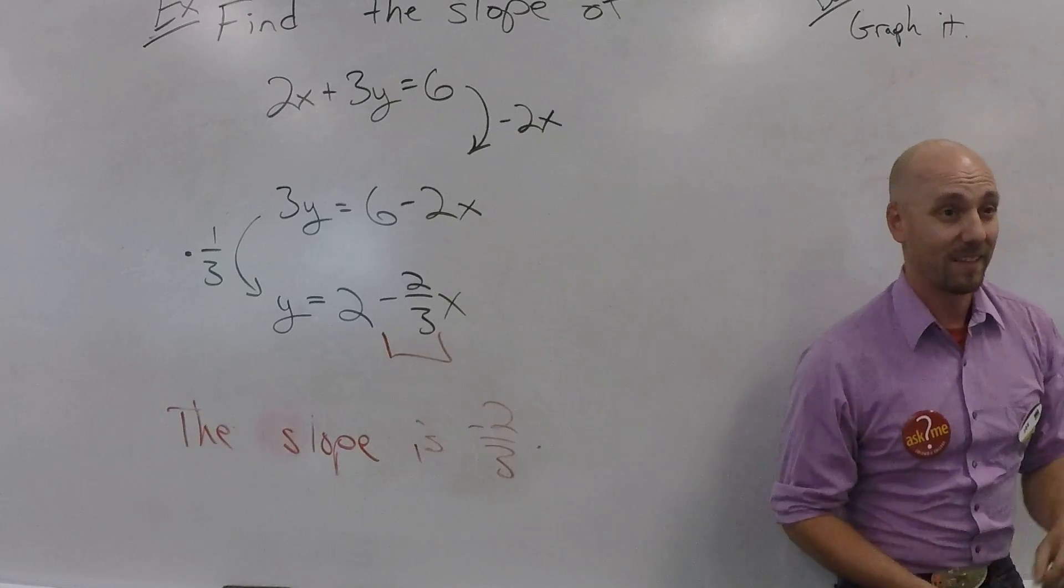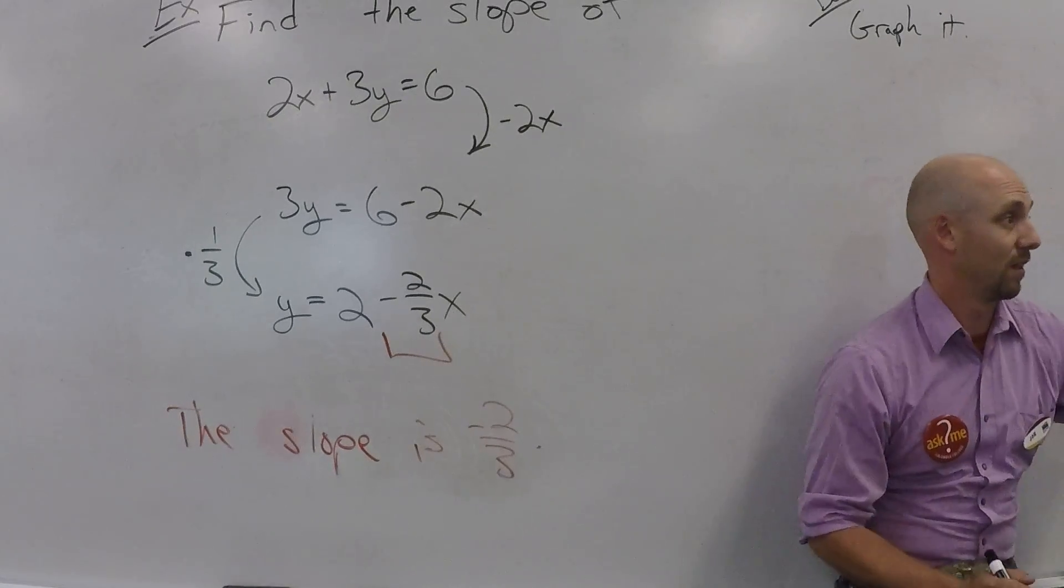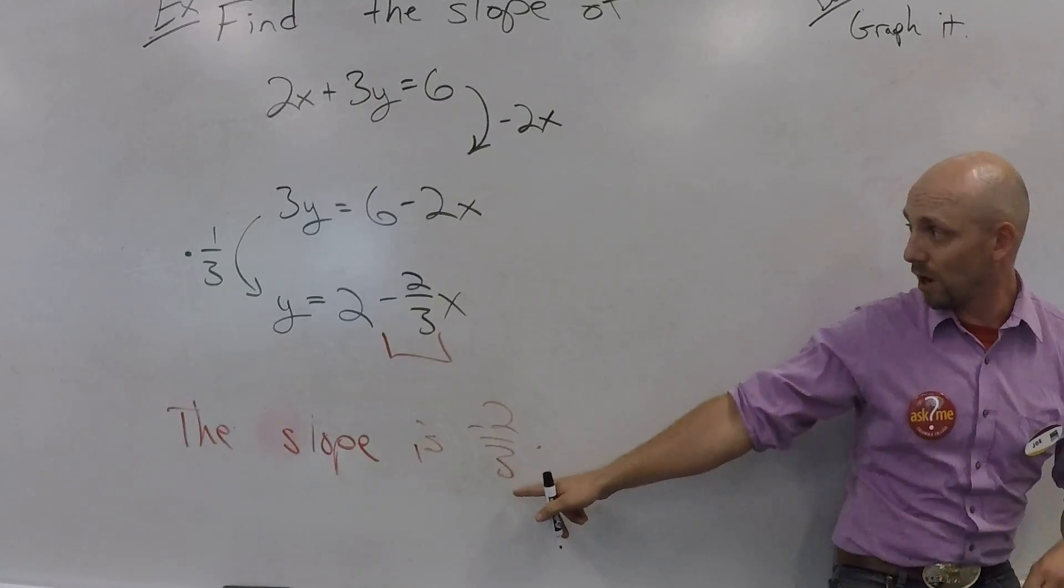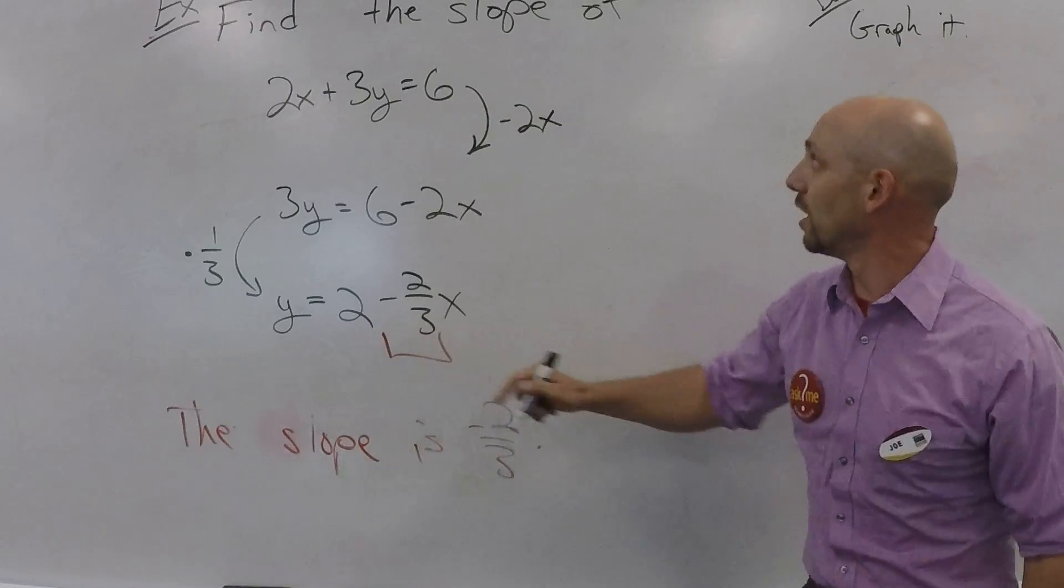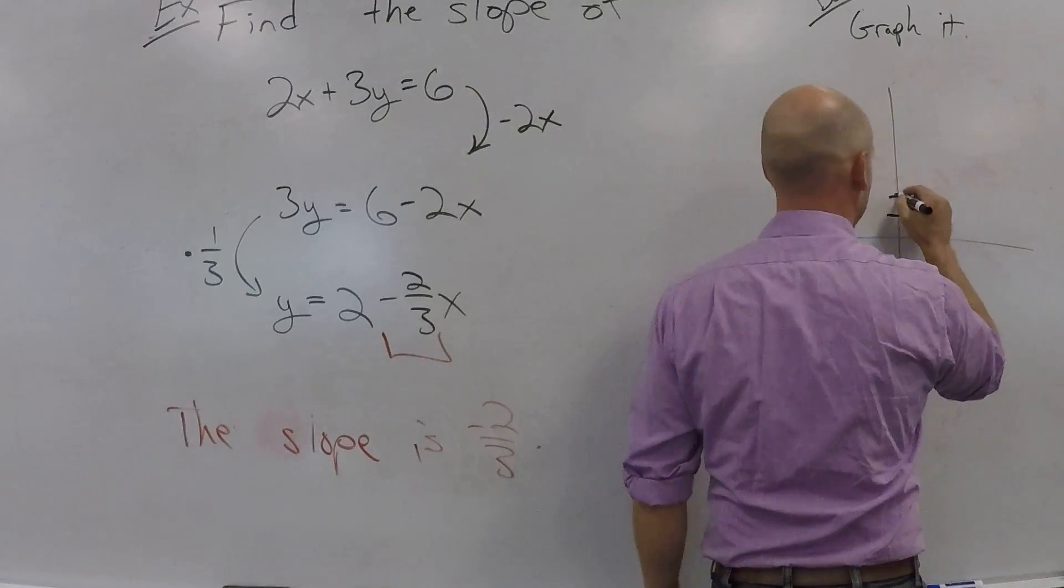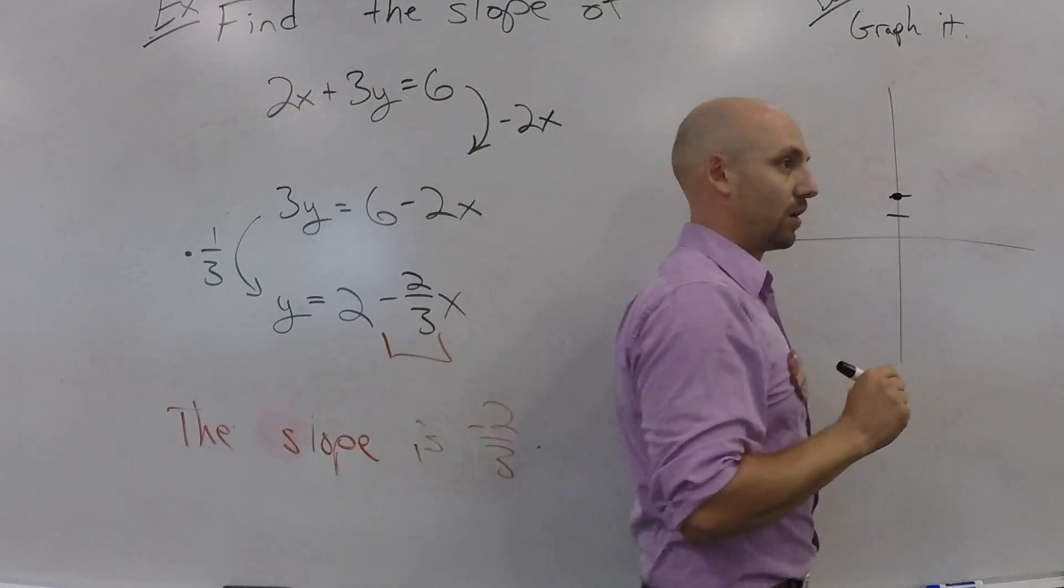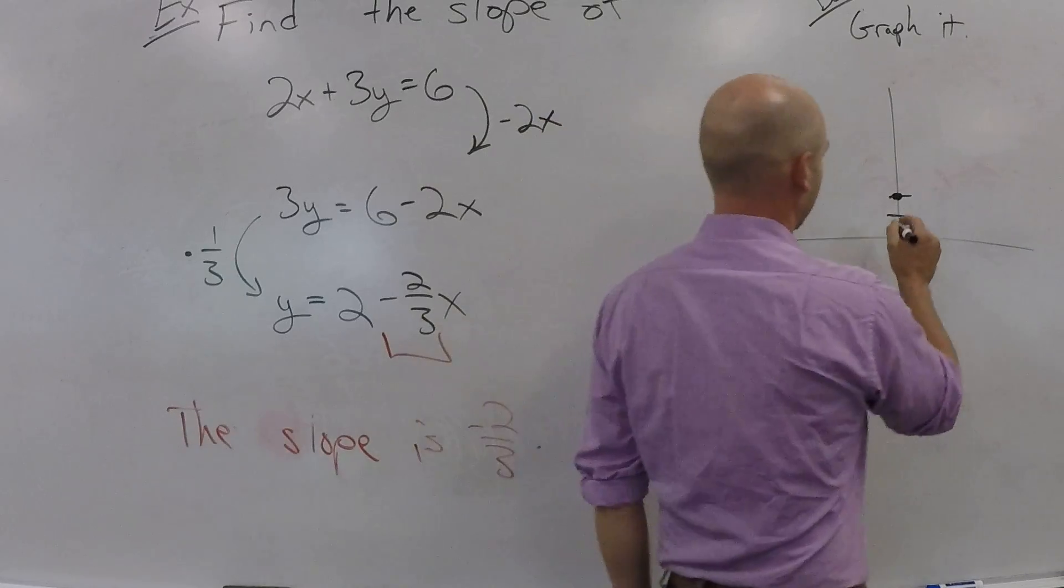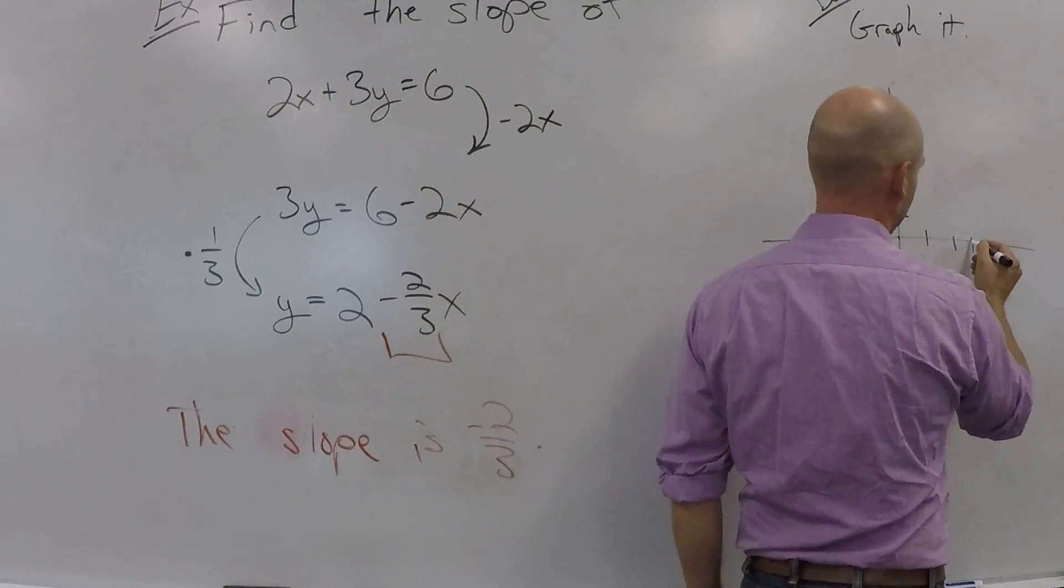All right. How do we graph this thing? Well, so you have the Y-intercept. Oh, wait. Where'd the Y-intercept go? The Y-intercept is going to be the 2. Okay. So, I knew the 2. So, that's 2, dot. And then you are going to go down 2 and over 3. Okay. So, I go down 2 to here. And then over 3. 1, 2, 3, dot.